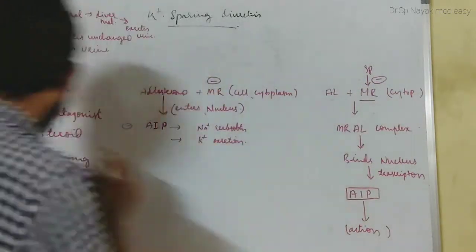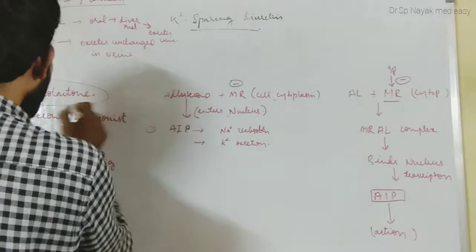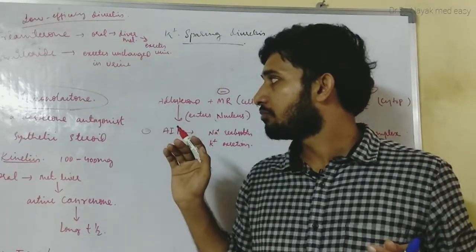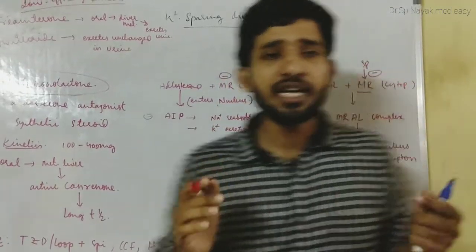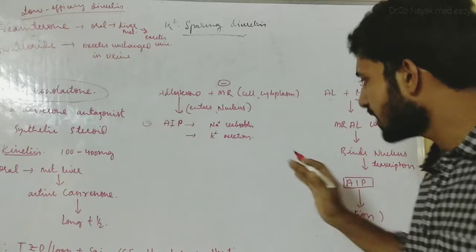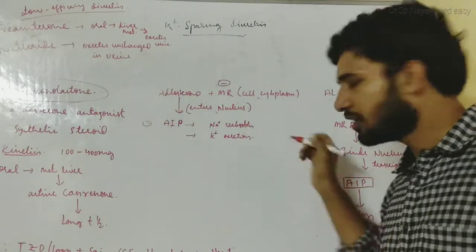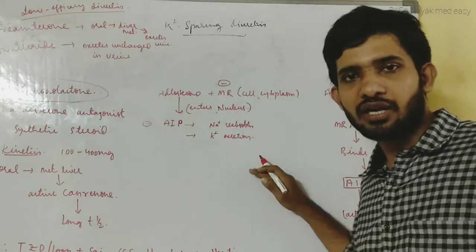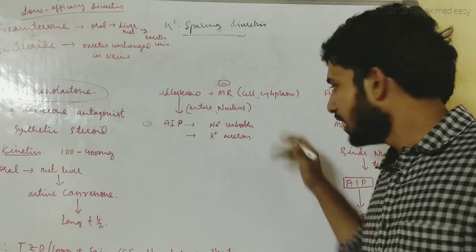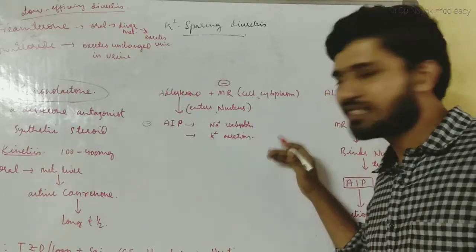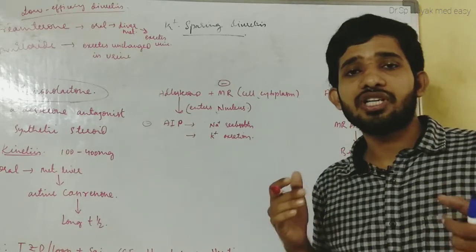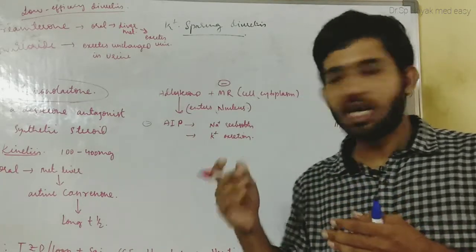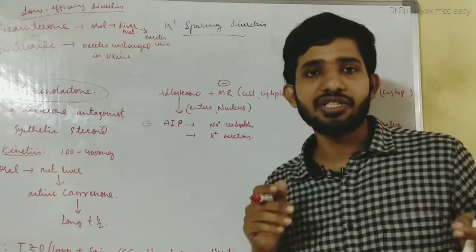Spironolactone is a drug which is an aldosterone antagonist. Aldosterone is a hormone synthesized by the adrenal cortex. In the adrenal cortex we have three different layers: zona glomerulosa, zona reticulata, and zona fasciculata. In zona glomerulosa it synthesizes aldosterone. Aldosterone is a mineralocorticoid, and it increases sodium reabsorption and increases blood pressure. Aldosterone release is commonly seen in hypovolemic and severe hemorrhagic conditions.